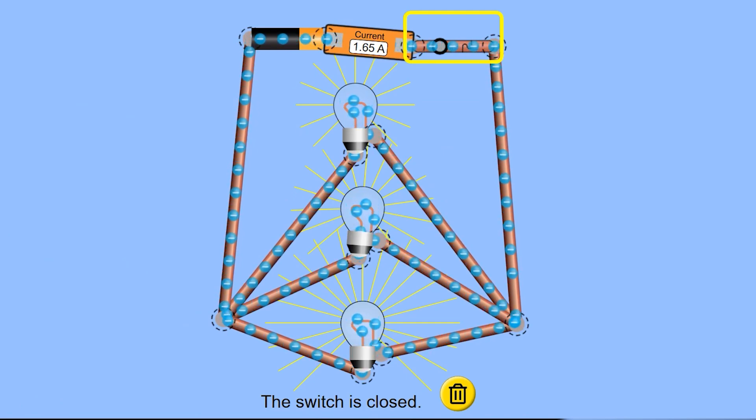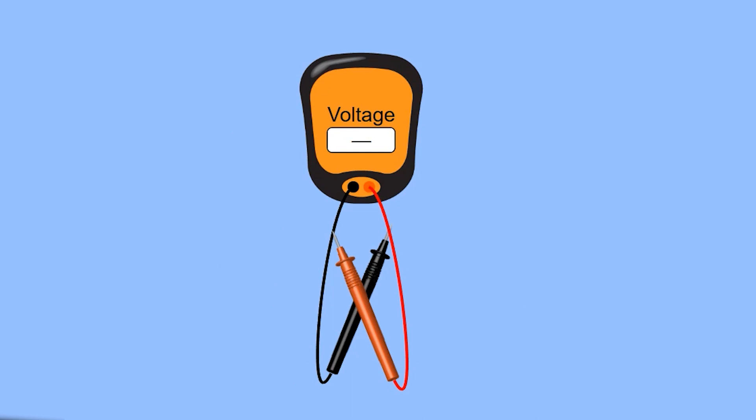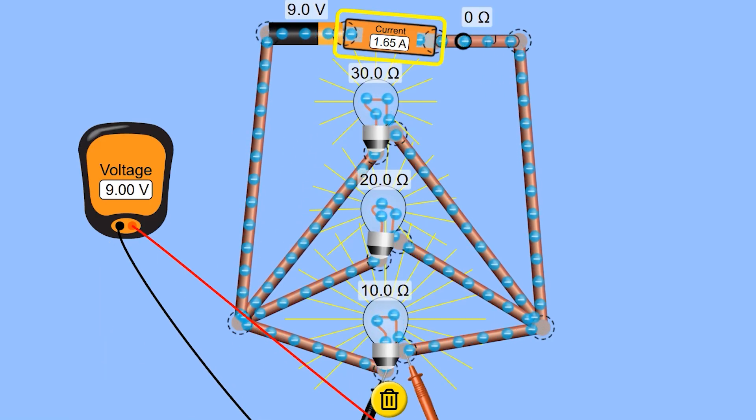We can see how in a parallel circuit, the light bulbs share the same voltage because they are directly connected to the same two points of the power source.